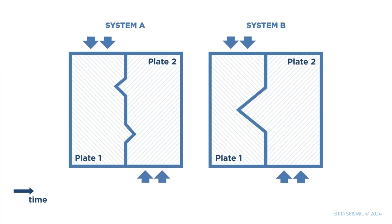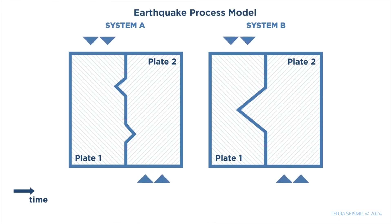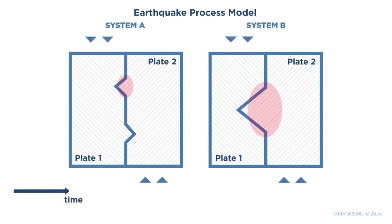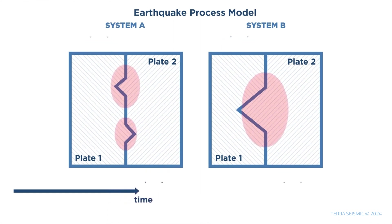Consider two seismic systems, A and B, each consisting of two plates that move relative to each other. System A has two small adhesion zones between its plates, which result in two small earthquakes. In contrast, System B has a single large adhesion zone that can cause a major earthquake. The process is driven by forces that move the plates and the opposing forces of friction or adhesion between them.